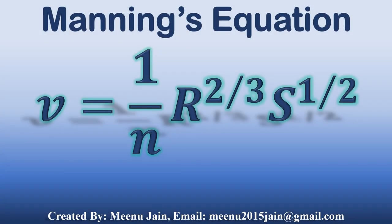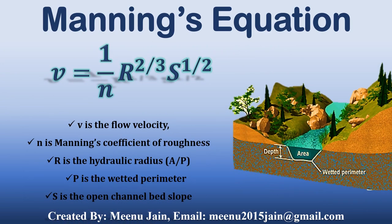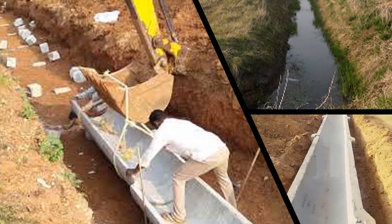This is the Manning equation, where V is the flow velocity, N is Manning's coefficient of roughness, R is the hydraulic radius, P is the wetted perimeter, and S is the open channel bed slope. The hydraulic radius R is calculated by dividing the cross-sectional area by the wetted perimeter. Manning's equation examines the relation between depth, slope, hydraulic radius, and channel roughness to the velocity and discharge within the channel. Therefore, it can be used to compute the flow and frictional losses in an open channel.